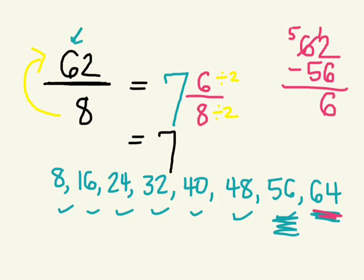So we can reduce this into a smaller fraction. So we still have our 7 wholes. And 6 divided by 2 is 3. 3. And 8 divided by 2 is 4. So 7 and 3 quarters is our answer.